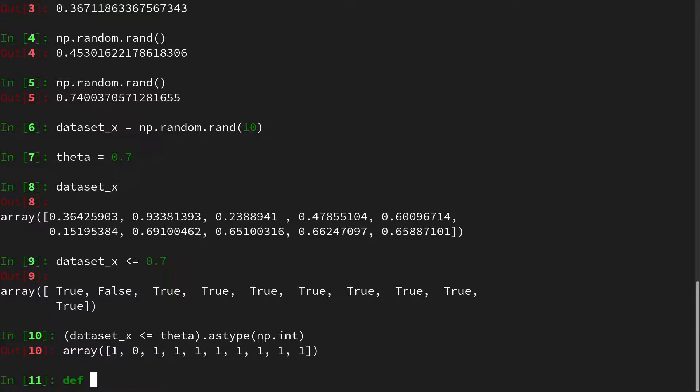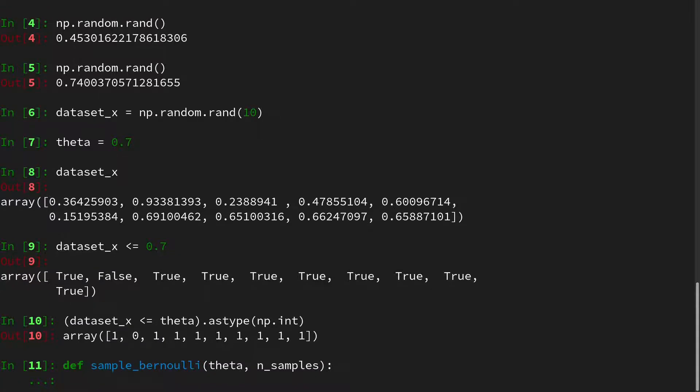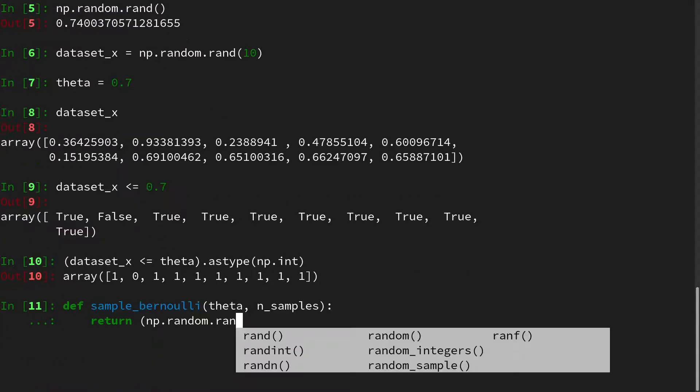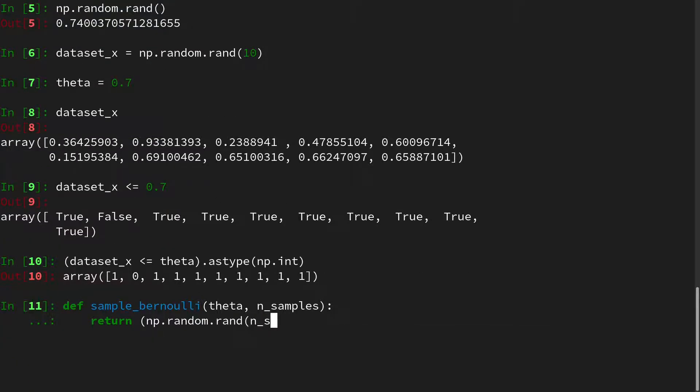And we can create a function that essentially does the same. I will call this sample_bernoulli. And it takes a theta and the number of samples that you want to query. And it will return the NumPy random generator with n sample uniformly sampled random variates. And it has to be smaller equal to theta. And then we cast this into a NumPy int.